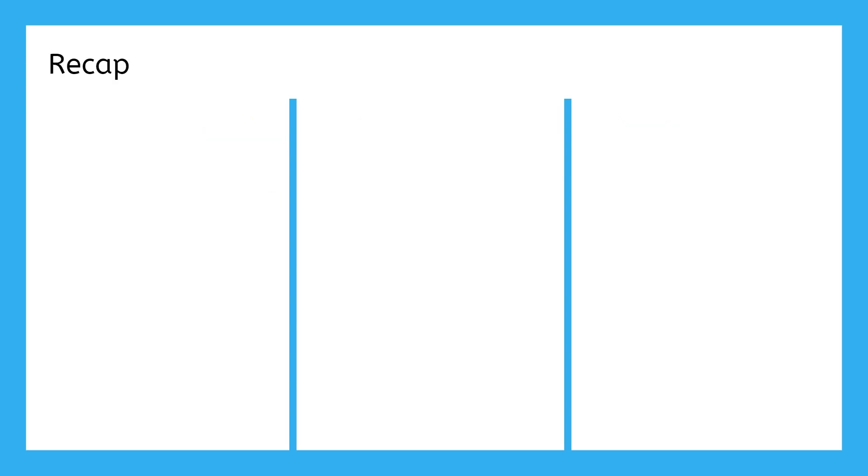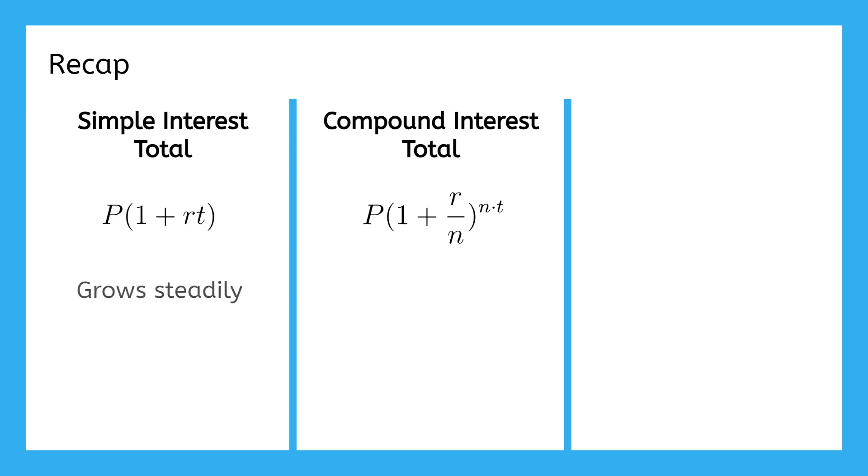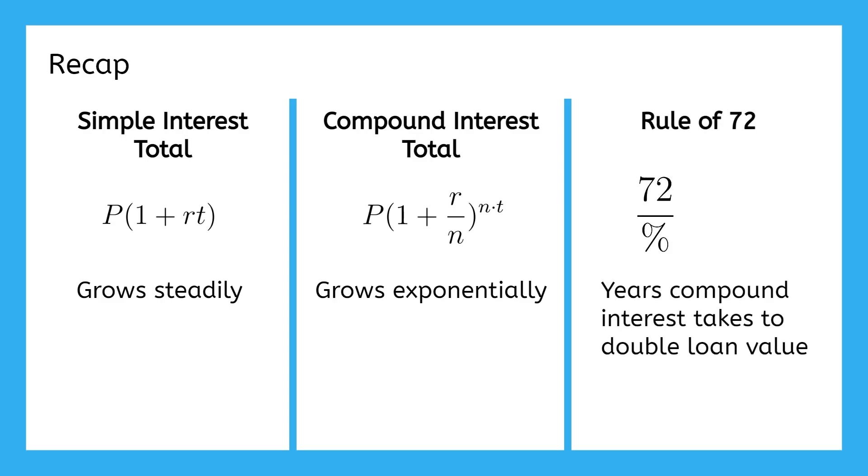For a quick recap, simple interest is calculated using a simple formula. Compound interest uses a less simple formula with an extra variable for how often it compounds per year. Simple interest is designed to grow at a steady rate for its term, while compound interest grows exponentially over time. For compound interest, you can use the Rule of 72 to estimate how many years it will take to double the loan value. But it's most accurate at around 8% interest, so you'll have to adjust it for higher or lower interest rates.